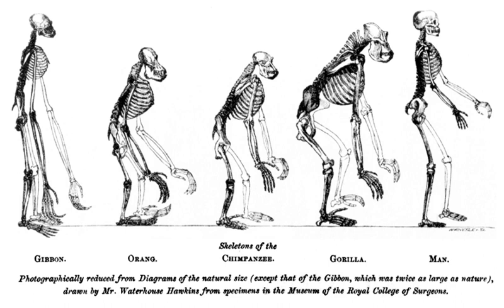The idea of a "tree of life" arose from ancient notions of a ladder-like progression from lower into higher forms of life, such as in the Great Chain of Being. Early representations of branching phylogenetic trees include a paleontological chart showing the geological relationships among plants and animals in the book Elementary Geology by Edward Hitchcock. Charles Darwin also produced one of the first illustrations and crucially popularized the notion of an evolutionary tree in his seminal book The Origin of Species.